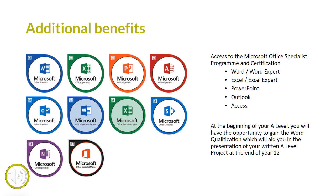In the IT department we have access to a wide range of extracurricular activities, one of which you will take part in during your first year. This will be the Microsoft Word part of the Microsoft Office Specialist programme certifications, helping you to format and present professional Word documents ready for your A level project. It is a globally recognised qualification, and you can move on to other applications for certification. By achieving certification in Word, Excel and PowerPoint or Outlook, you would become an Office Specialist Associate. Complete these plus Word, Excel, and Access in Expert mode to become a Microsoft Office Specialist Expert.